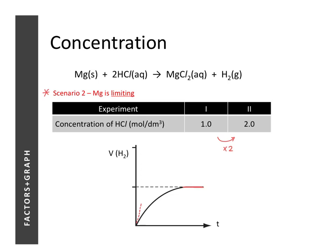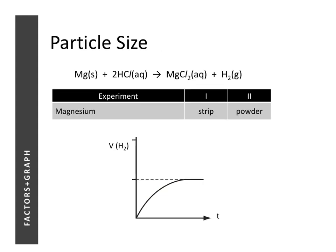Since the total volume of gas produced is the same, we need to focus on the third point: the time at which the reaction completes. Given that the volume is the same but experiment two has a faster reaction speed, it is expected to complete at an earlier time. The curve for experiment two must reach the plateau — gradient equals zero — at a time earlier than experiment one.